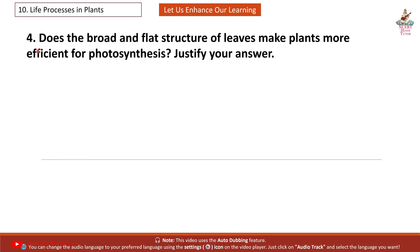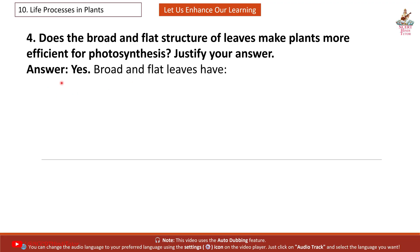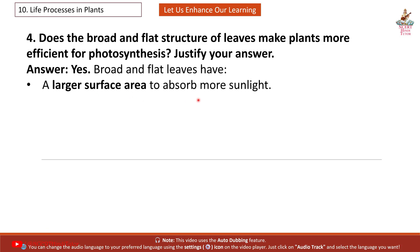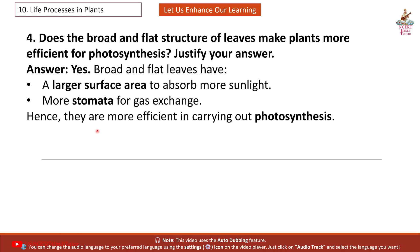Question 4: Does the broad and flat structure of leaves make plants more efficient for photosynthesis? Justify your answer. Answer: Yes. Broad and flat leaves have a large surface area to absorb more sunlight, and more stomata for gas exchange. Hence, they are more efficient in carrying out photosynthesis.